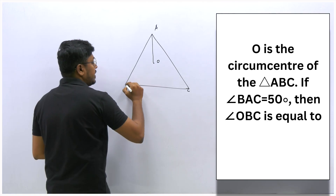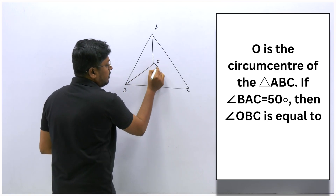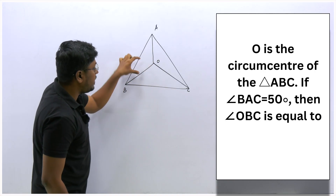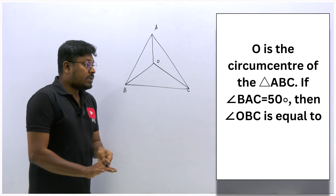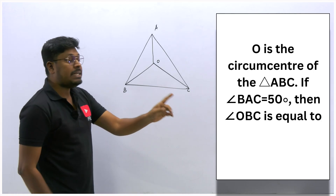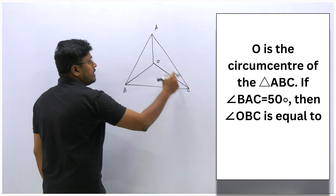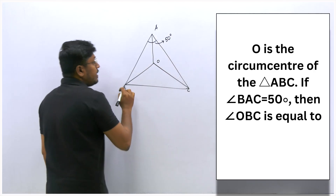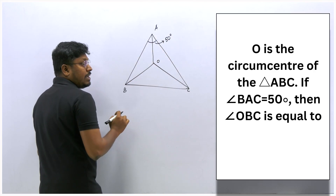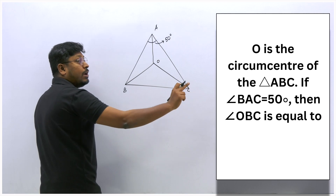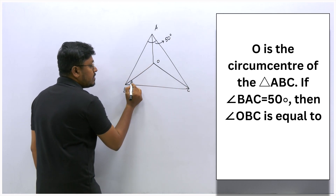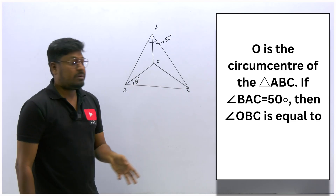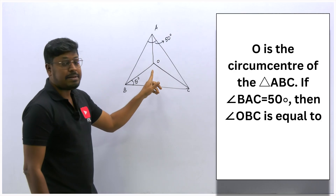Since O is the circumcenter, all three lines OA, OB, and OC are equal in length, making each sub-triangle isosceles. The given angle BAC = 50° is the angle opposite to the circumcenter angle BOC. So the circumcenter angle BOC = 2 × 50° = 100°.